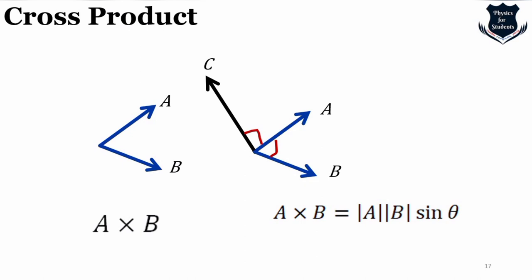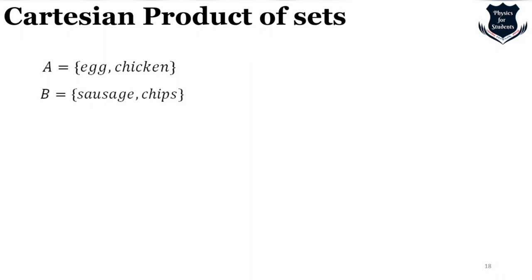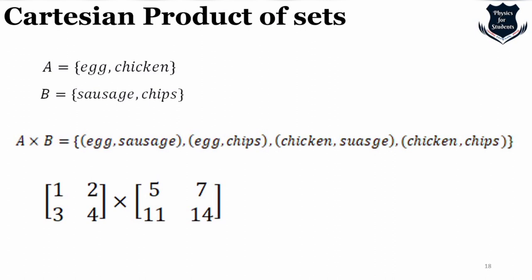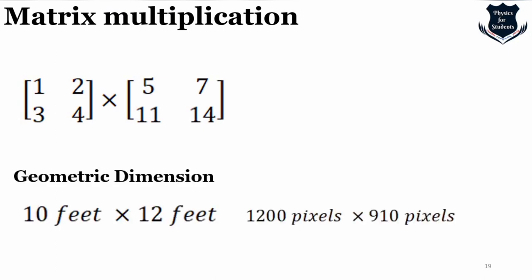The Cartesian product of sets uses the multiplication sign — for example, A = {egg, chicken} and B = {sausage, chips}: the Cartesian product yields pairs like (egg, sausage), (egg, chips), (chicken, sausage), (chicken, chips). The multiplication sign is also used in matrix multiplication. It is also used in geometric dimensions, for example a 10×10 feet room or screen resolutions like 1200×900 pixels.